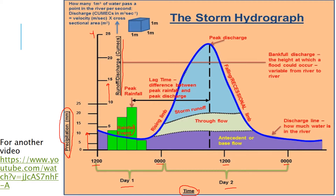Just over here, we've got a handy label which says rainfall event. You can see that it's been raining between these hours. Now, when it rains, that rainwater will eventually find its way into our rivers. This blue line refers to the discharge the river is providing — the amount of water being removed from our drainage basin.